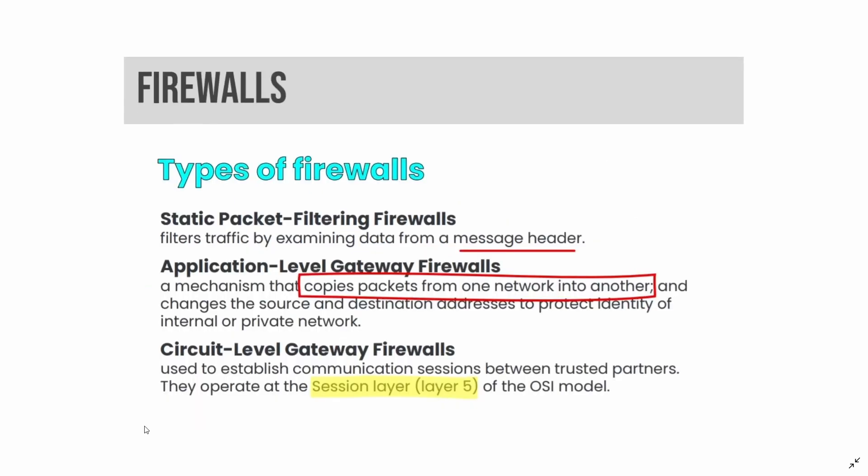There are several types of firewalls. Static packet filtering firewalls filter traffic by examining data from a message header. Application-level gateway firewalls use a mechanism that copies packets from one network into another, changing the source and destination addresses to protect the identity of internal or private networks. Circuit-level gateway firewalls are used to establish communication sessions between trusted partners and operate at the session layer, or layer 5 of the OSI model.